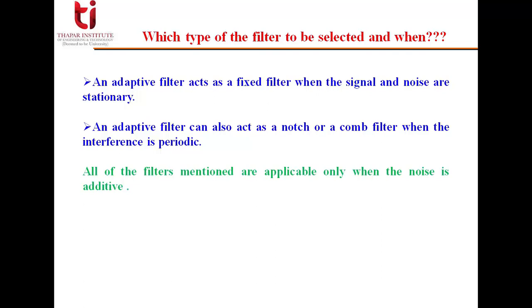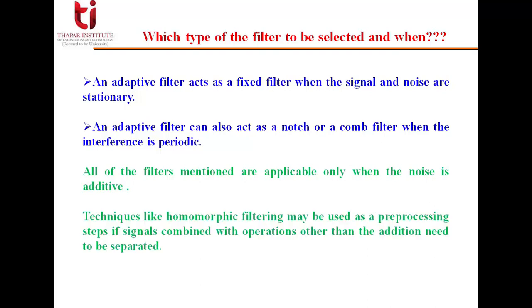All of the above mentioned filters are applicable only when the noise is additive, basically when the noise is added into the signal. If it is multiplication or kind of convolution, techniques like homomorphic filtering may be used as a pre-processing step if signals combined with operations other than addition need to be separated.